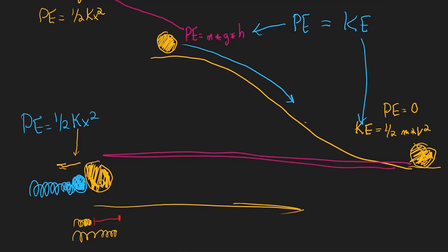We can do the same thing here: the ball starts at rest with a compressed spring, so that's potential energy. When the ball starts moving, that's kinetic energy. So we set them equal: one-half kx squared equals one-half mv squared. Notice that k and m play similar roles, and x and v play similar roles in their respective equations.